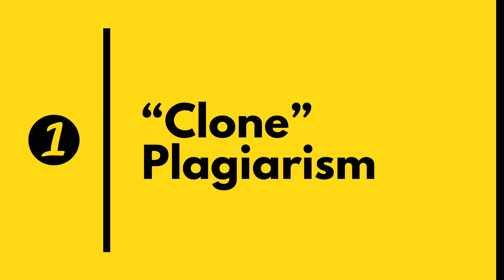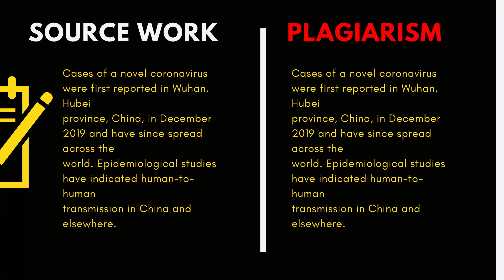Cloning is the first type of plagiarism, also called identical copying. One person copies another's work word by word without any change and claims that work as their own. This usually happens when a person does not want to do the work on their own but instead chooses to use another's work and submit it as their own. As long as the first work had already been submitted, the second work will automatically be detected by the plagiarism tool.